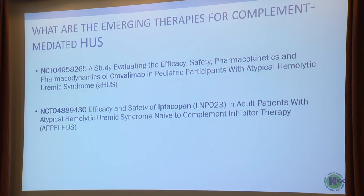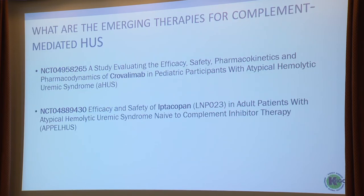What are the emerging therapies? Crovalimab — it's a C5 inhibitor in clinical trials in HUS, kind of a me-too drug. And perhaps slightly more exciting from a mechanistic point of view is iptacopan, an oral Factor B inhibitor being used in aHUS.